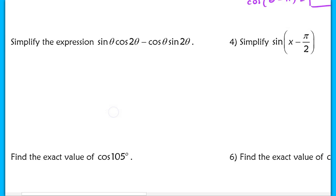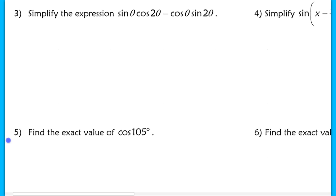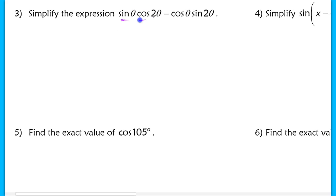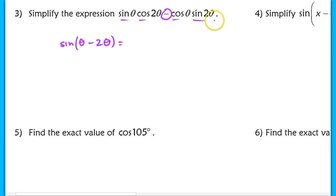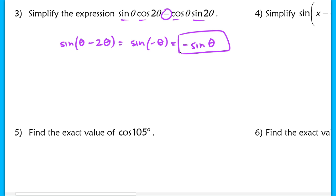Next, a similar expression: we see 'sine, cosine, cosine, sine,' so this is one of the sine formulas. The sine formula does not change the sign, so this originally would have been sine(θ − 2θ). Applying the addition rule for sine gives sine(−θ). Now sine(−θ) equals −sine(θ) by the opposite angle identity, so that's the simplified result.